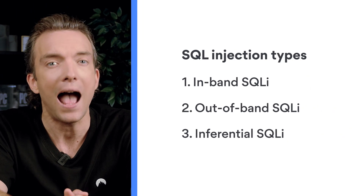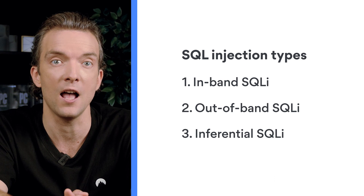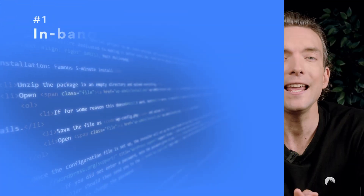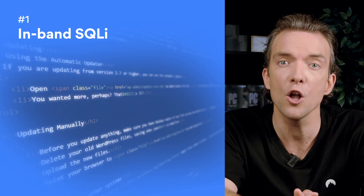There are different SQL injection types that make the database do different things. The most common are in-band SQLI, out-of-band SQLI, and inferential SQLI. An in-band SQLI attack uses the same channel to launch an attack and to extract the results. So if a hacker performs an attack manually using a web browser, the result of the attack will be displayed in the same web browser.